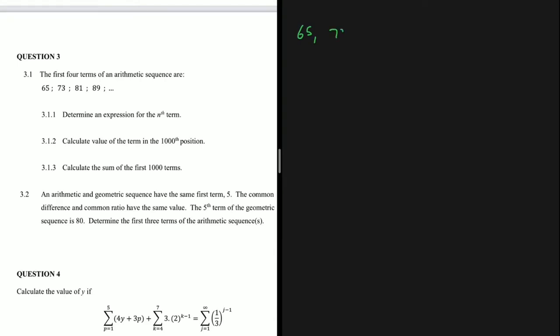The first four terms of an arithmetic sequence are 65, 73, 81, and 89. Question 3.1.1 says: determine an expression for the nth term of the sequence. We know that for an arithmetic sequence, the general expression is given as tn = a + (n-1) × d.